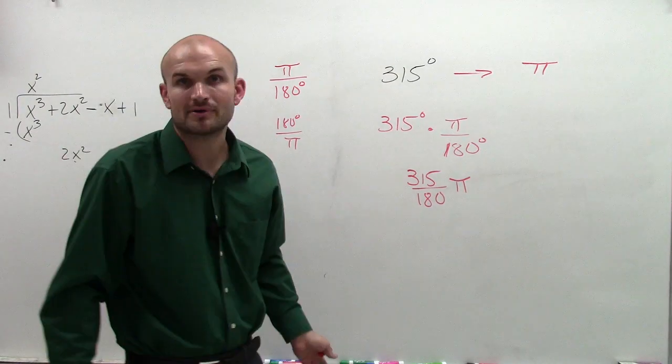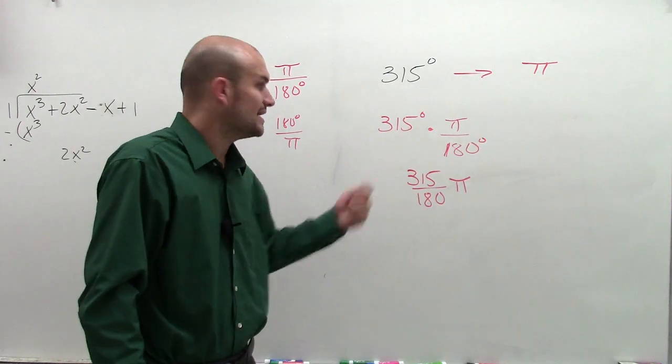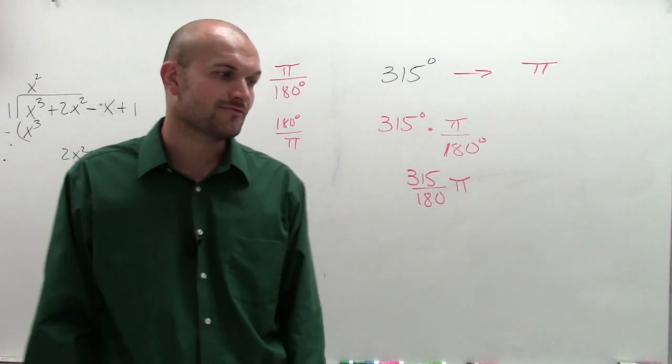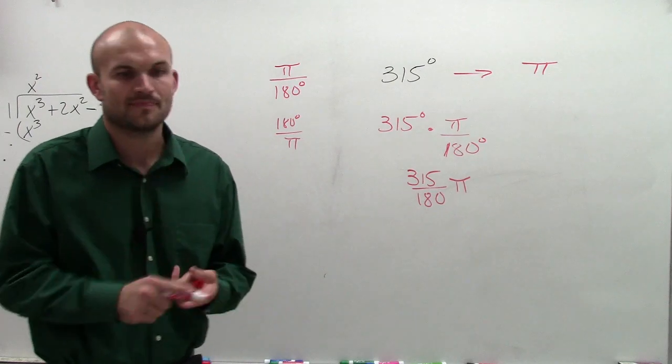So now I need to see, can I reduce this? Is there the same number that divides into 315 and also divides into 180? Well, thinking of the easy numbers that we use with our angles - 30,